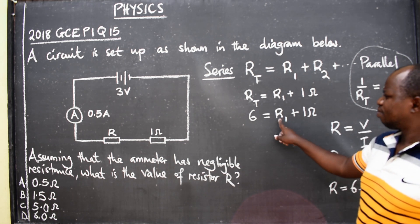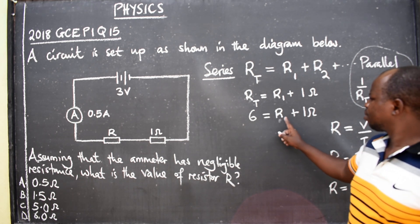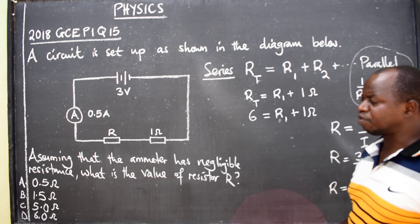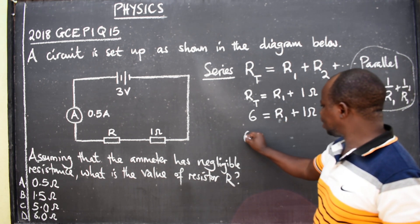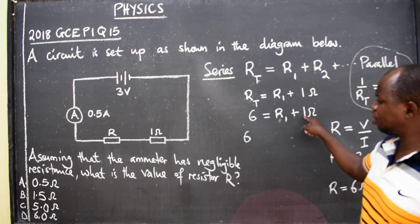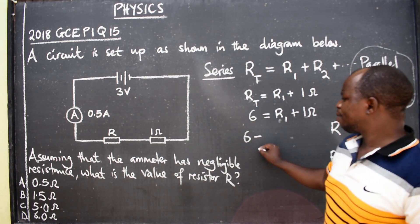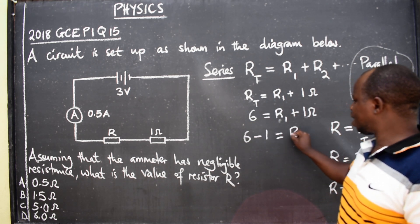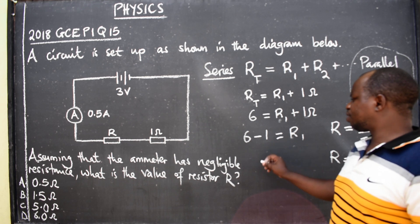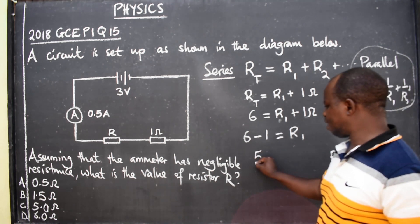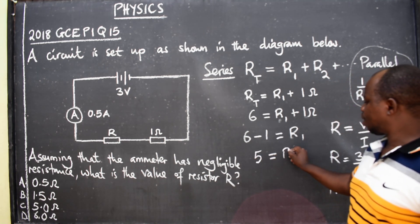To remain with R1, or making R1 subject of the formula, we are going to say 6, this 1 here which is positive will cross the equal sign to be minus 1, is equal to R1. So when we subtract, we are going to have 5, which is equal to R1.